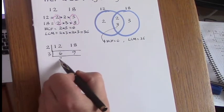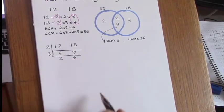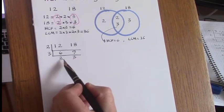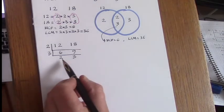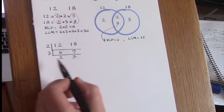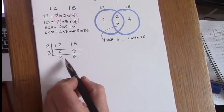These remaining numbers are co-prime, they're relatively prime, and so no more division can take place.